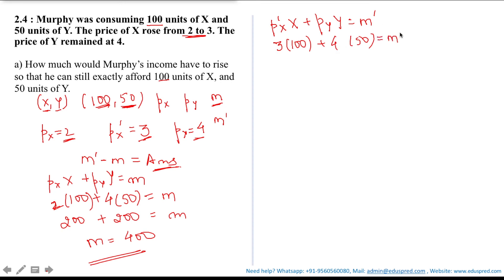Thus my new income would be M dash, that is 300 plus 200 is equal to M dash.